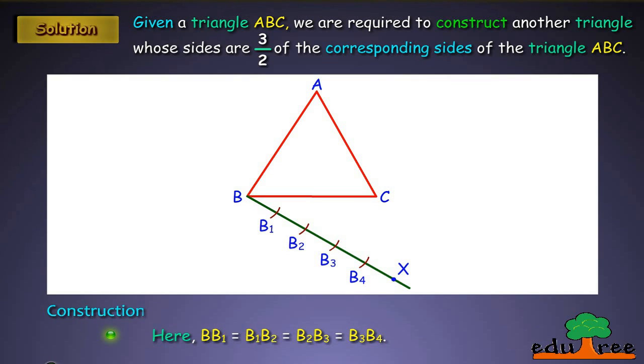Here, BB1 equals B1B2 equals B2B3 equals B3B4. Join B4C. Draw a line through B3 parallel to B4C to intersect BC at C dash.